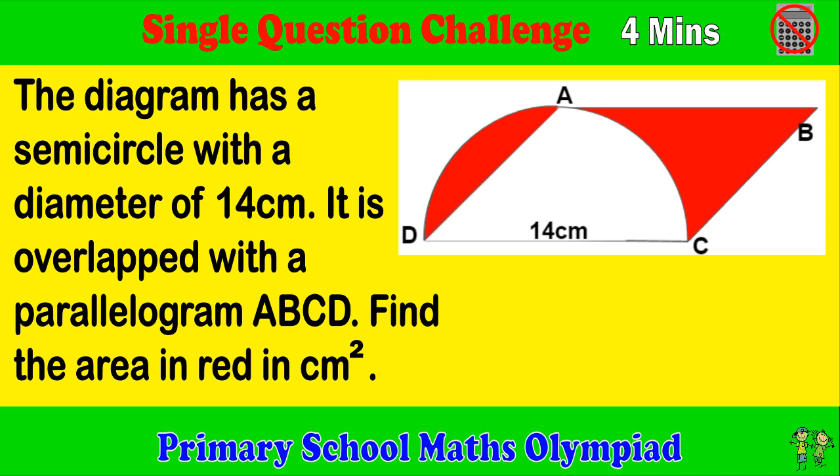The diagram has a semicircle with a diameter of 14 cm. It is overlapped with a parallelogram ABCD. Find the area in red in cm².